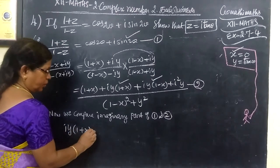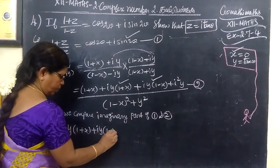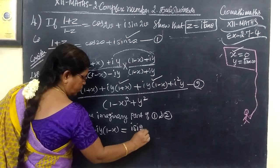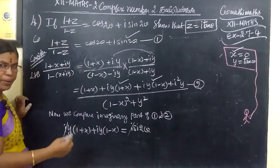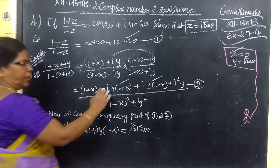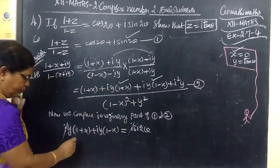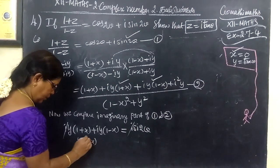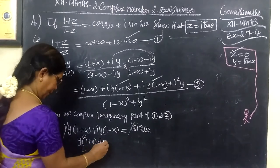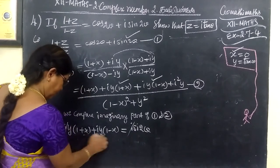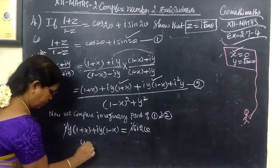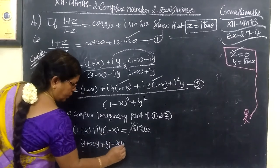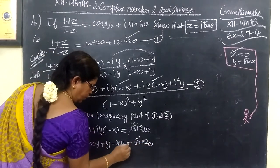Considering the imaginary part with 1 plus iy and 1 minus x equals i sin 2θ. Taking y common: y(1 + x) plus y(1 - x) equals sin 2θ.